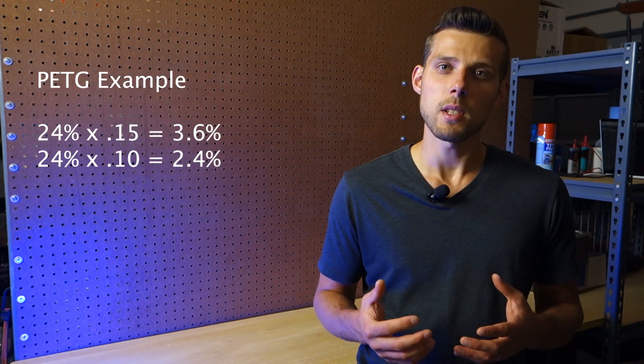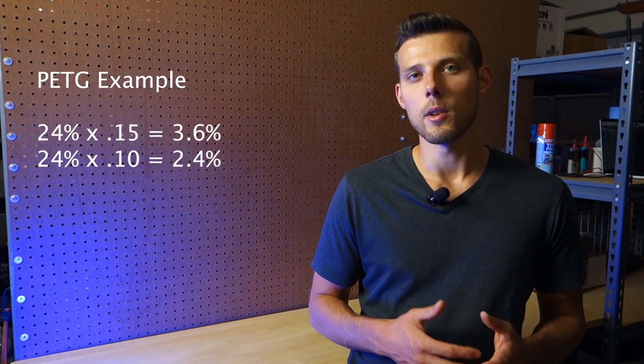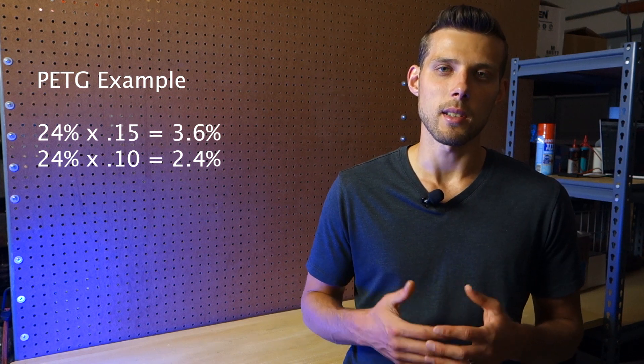For example, PETG has an elongation at break value of 24%. So that means you should design a snap hook that bends 2.4 to 3.6% elongation.